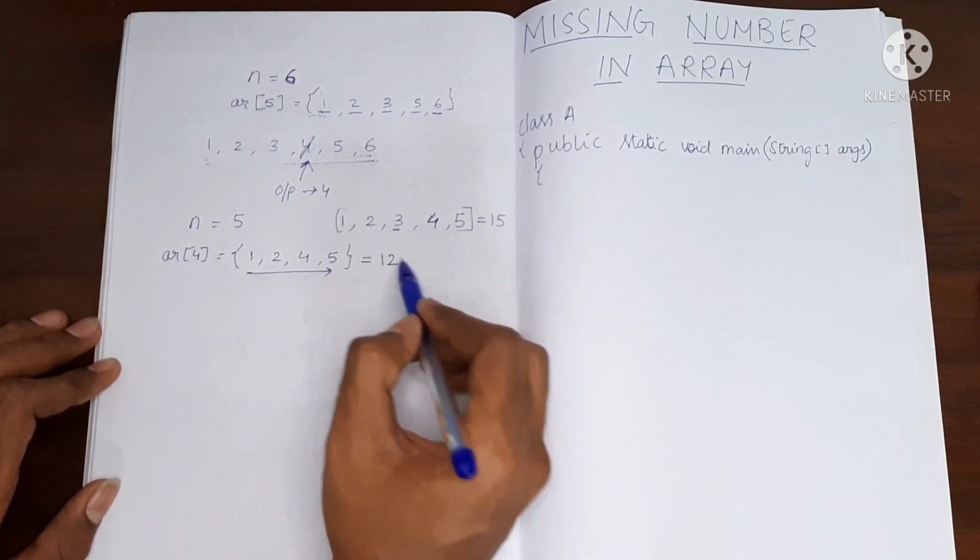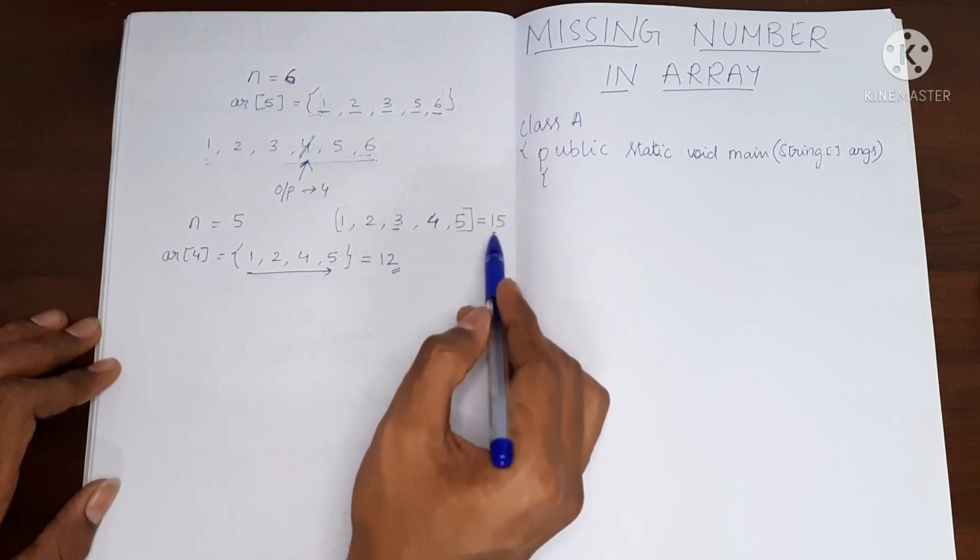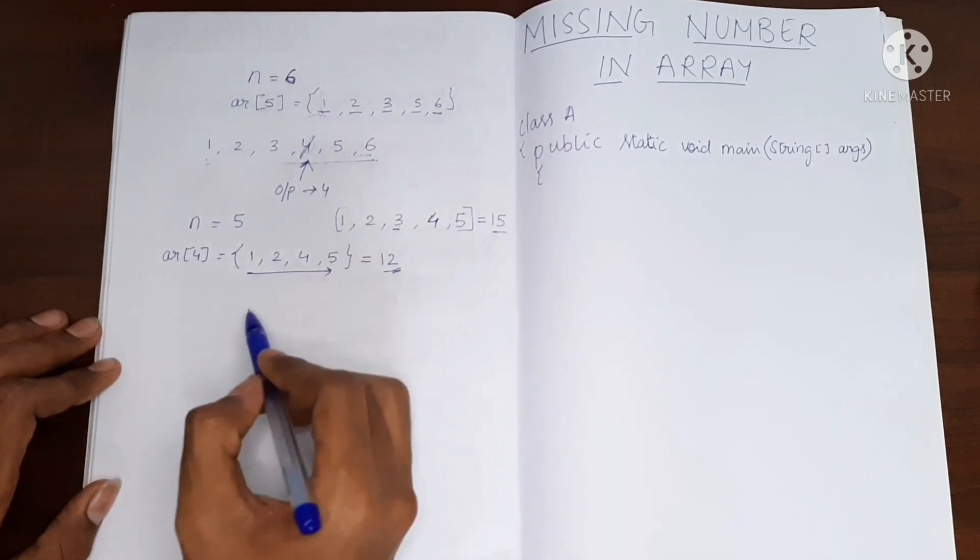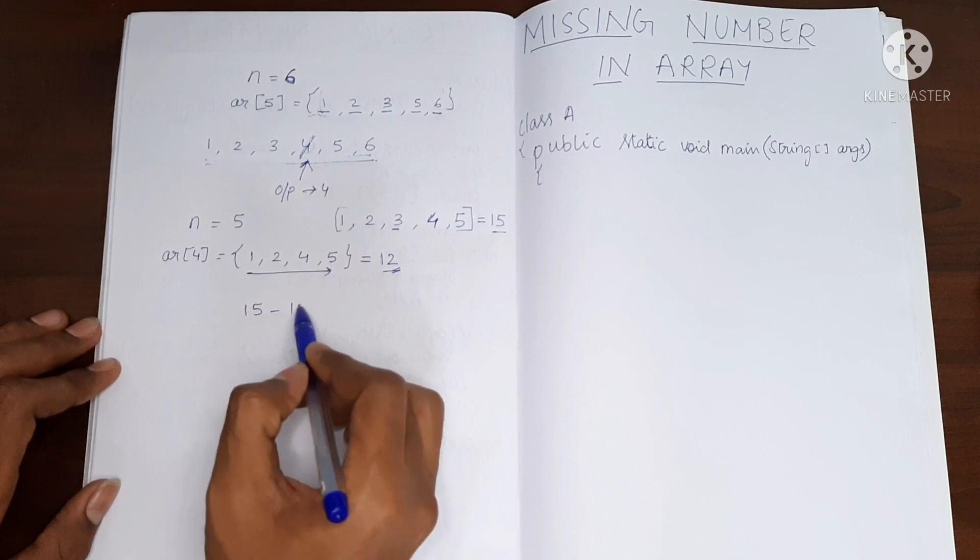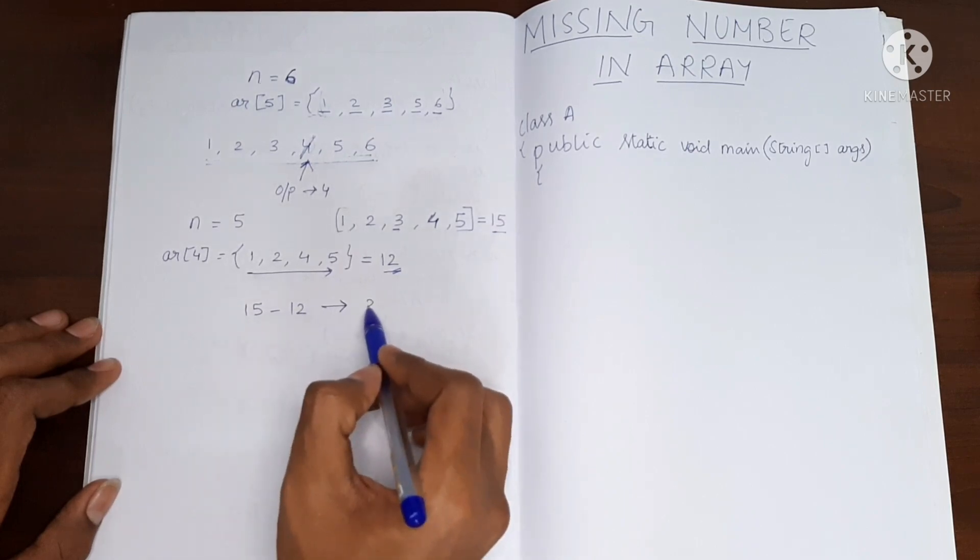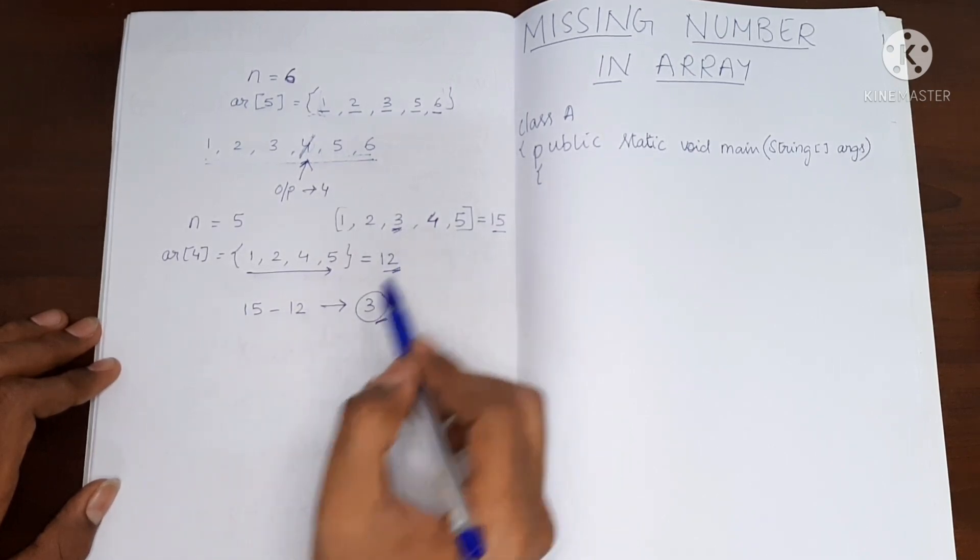So here we are getting the answer as 12. If we subtract 15 from 12, that will be 15 minus 12, it will give you the answer 3. And you can see that this is the missing value.